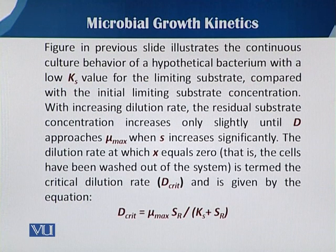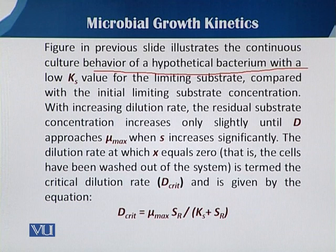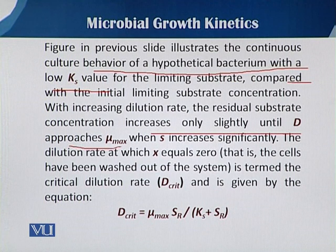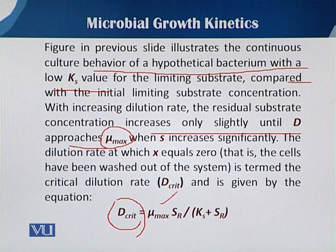The previous figure shows the continuous culture behavior hypothetically for a bacterium with low Ks value for the limiting substrate. With increasing dilution rate, the residual substrate concentration increases only to a certain limit when μmax becomes maximum. At that state, when dilution rate reaches its maximum, that is called the critical dilution rate.